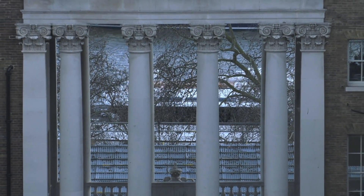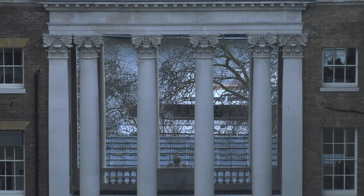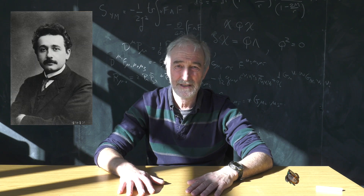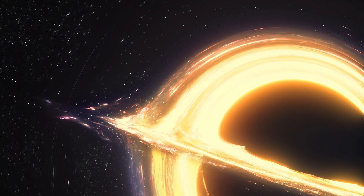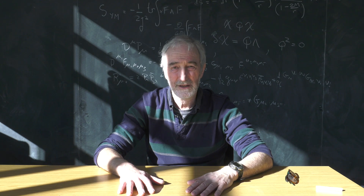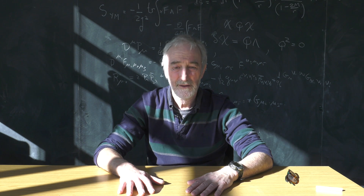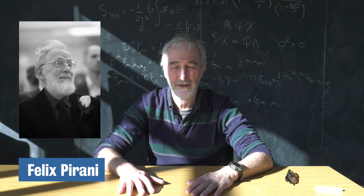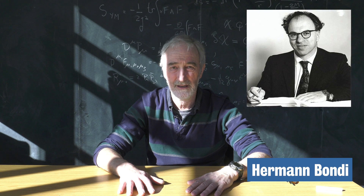In turn, special relativity led to general relativity, as formulated by Einstein in 1915. What is not well known is that general relativity was not regarded as a proper physical theory until about the mid-1950s. This change of viewpoint came about by Felix Pirani and Hermann Bondi, also at King's.